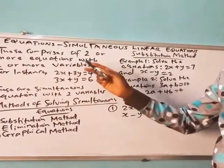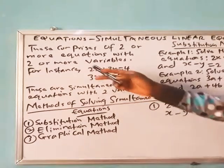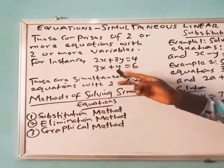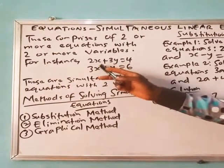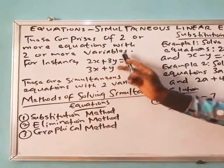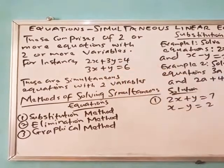This comprises of two or more equations with two or more variables. For instance, 2x plus 3y is 4, 3x plus y is 6. 2x plus 3y is 4 is a linear equation with two variables. So these are simultaneous equations with two variables.